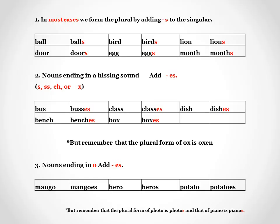In most cases, we form the plural by adding S to the singular. For example, ball becomes balls, bird becomes birds, lion becomes lions.